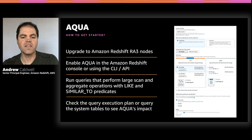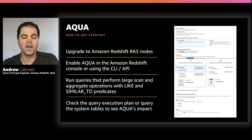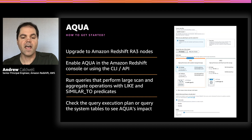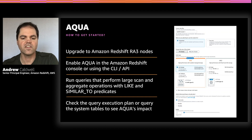Aqua is available for anyone to preview, and the team has been working on this for more than two years. To try out Aqua, please fill out the preview request form and we'll get back to you quickly. When you get a response, you'll launch an RA3 16XL or 4XL cluster — or use one of your existing ones in the supported preview regions — and Aqua will be enabled by default. When Aqua goes into production in January, it will be enabled via a cluster-level switch on the Redshift console. There are no per-query or per-table settings to manage — you just flip the cluster switch to on. At GA, Aqua will be automatically leveraged only for scans that include LIKE or SIMILAR TO predicates — that's what Redshift is keying off of to decide to send a subquery down to Aqua.